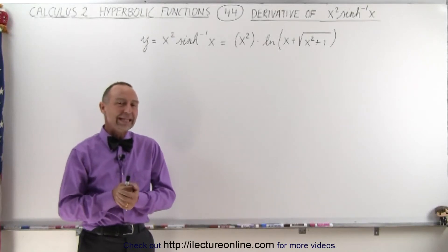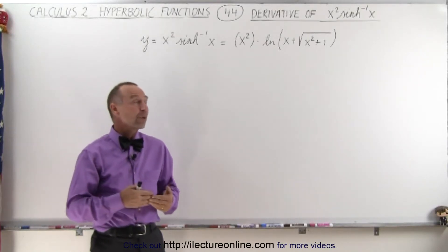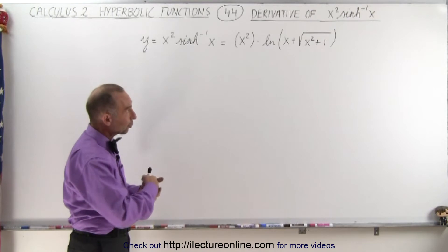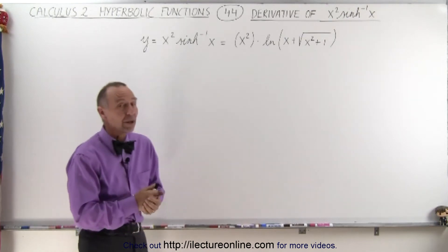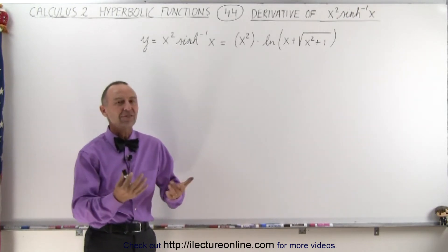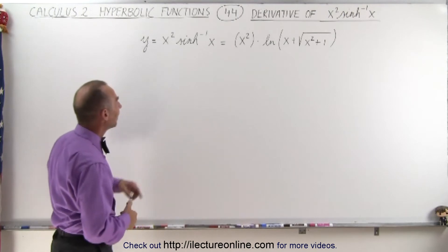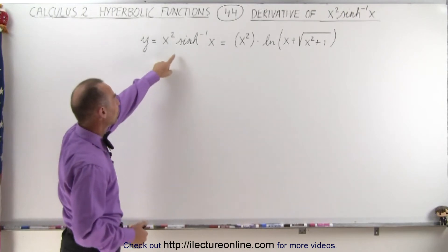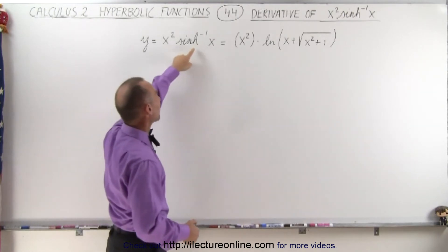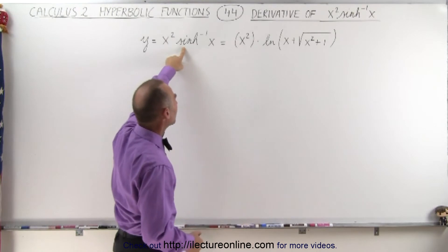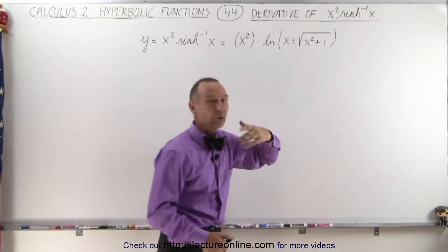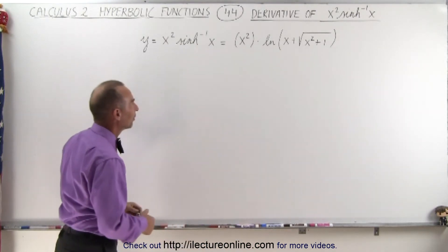Welcome to ElectronLine. In this example, we're going to take the derivative of x squared times the inverse hyperbolic sine of x. A nice example to see how we would do that. The trick is to take the inverse hyperbolic function — in this case the sine of x — and rewrite it in terms of its equivalent in terms of x.